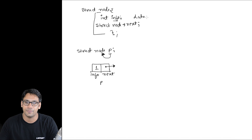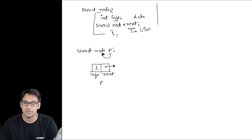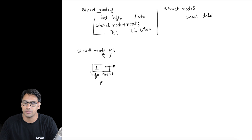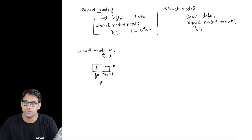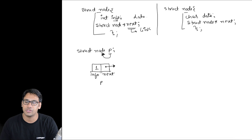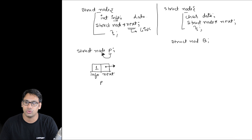In some cases you will find different names used: instead of `info` they write `data`, and instead of `next` they write `link`. The names don't matter, but the structure of the node does. For example, we can also define a node as `struct node` with `char information` and `struct node* next`, which stores character data instead of integer data.